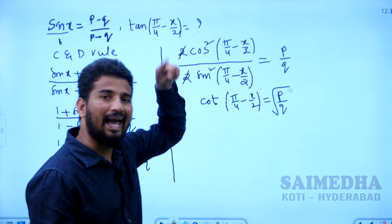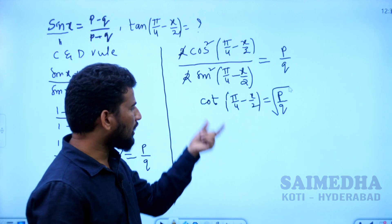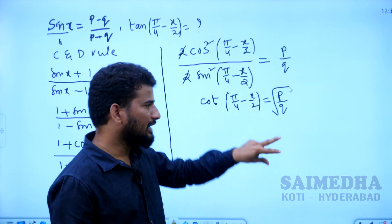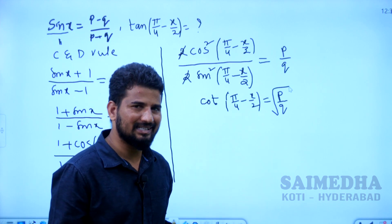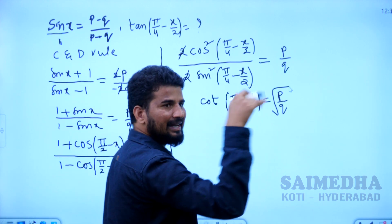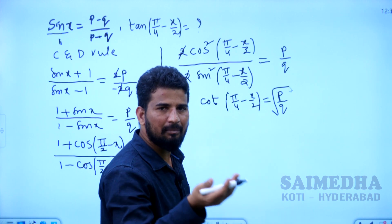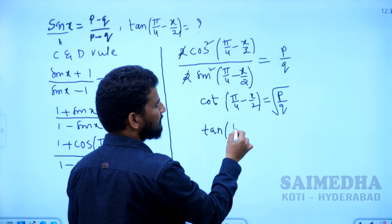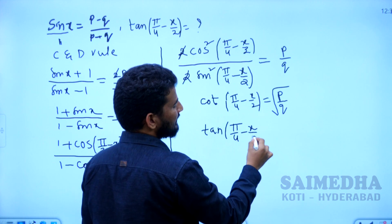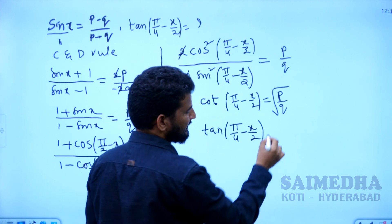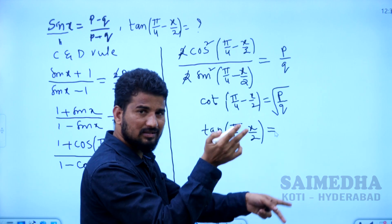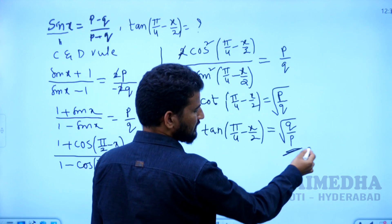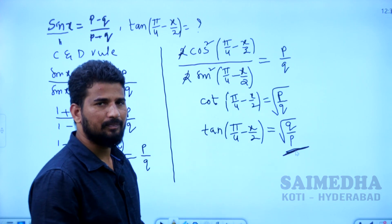But the question was asking about tan(π/4 minus x/2). Since cot is the reciprocal of tan, the reversal of root(p/q) on the right-hand side gives tan(π/4 minus x/2) equal to root of (q by p). The final answer is root of q by p.